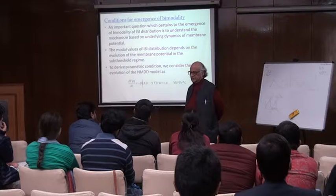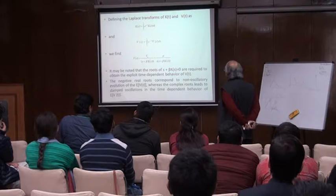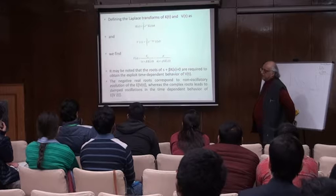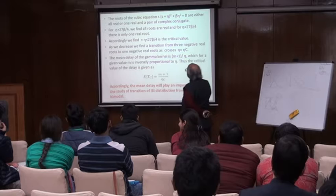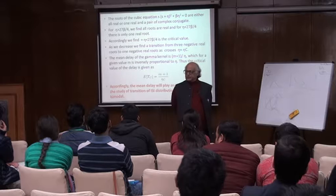So mathematically, you say that oscillation will come when the solution of this equation has complex roots. So if there are complex roots — when eta is greater than this parameter — you find the critical value of eta which will lead to an oscillating pattern.